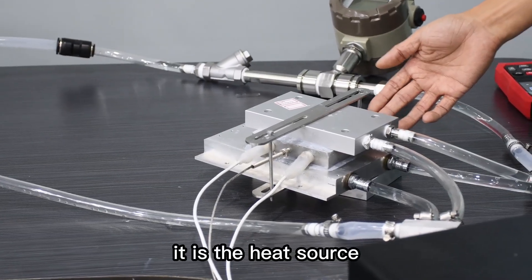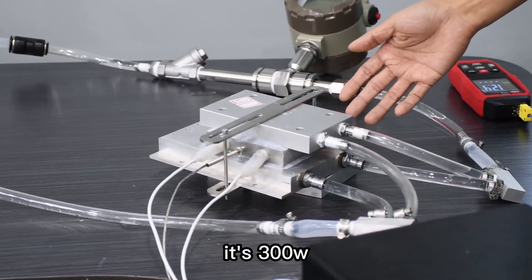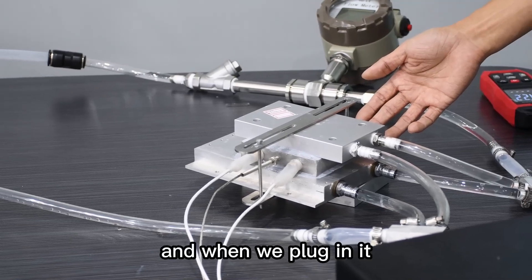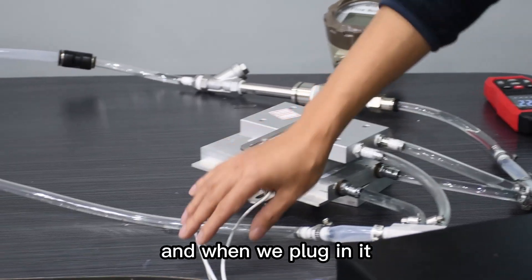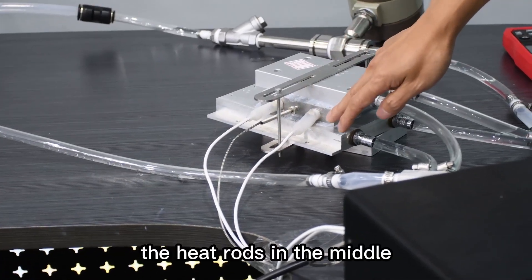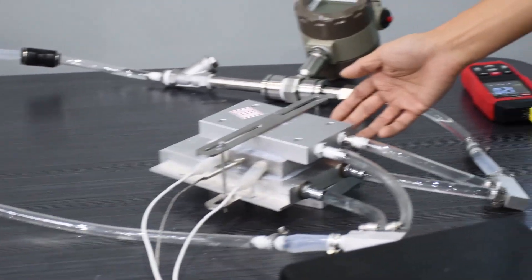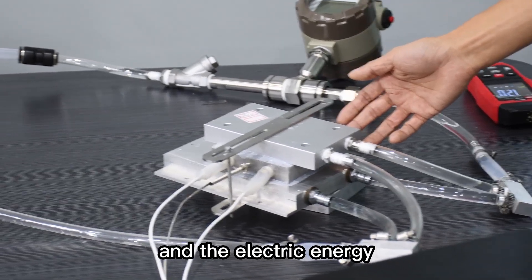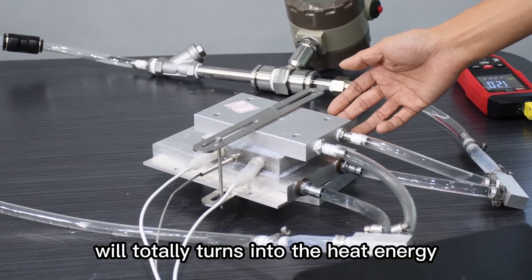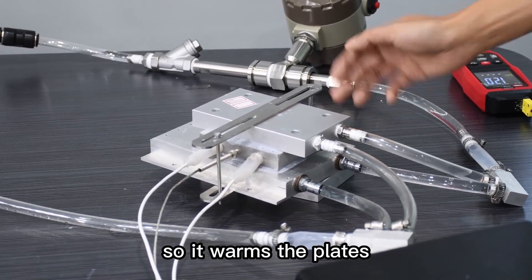The heat plate is a heat source. It's 300 watts. When we plug in, the heat coils in the middle will produce electric energy, and the electric energy will totally turn into heat energy. So it warms the plate.